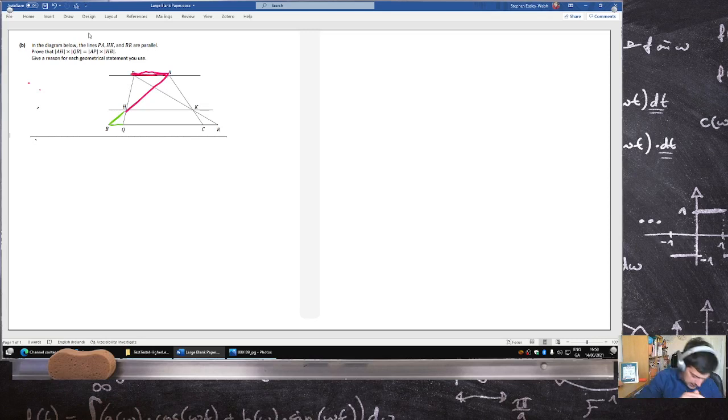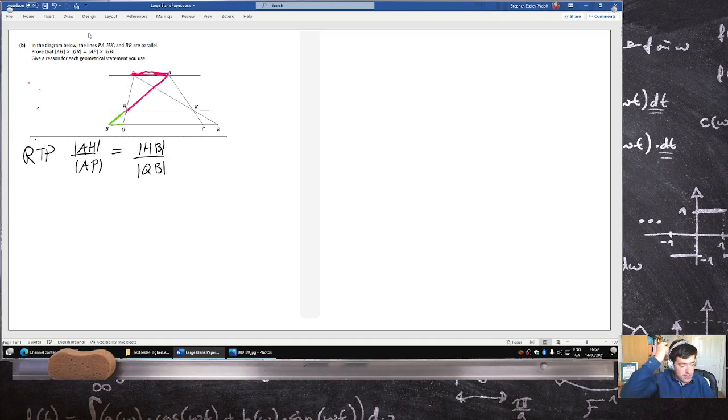I think the trick here is it's nothing to do with multiplication, it's division. So we're not really required to prove this if we just divide, we're required to prove that AH over AP is the same as HB over QB. It's the same statement if you just divide.